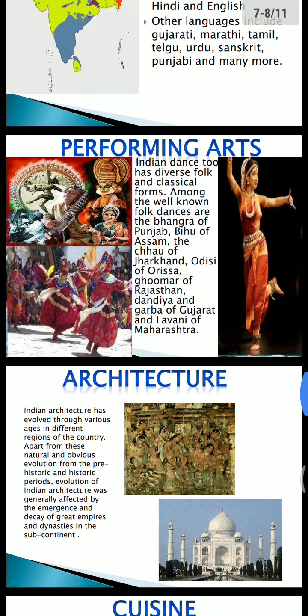If we talk about performing arts, Indian dance has diverse folk and classical forms. Among the well-known folk dances are the Bhangra of Punjab, Bihu of Assam, Chau of Jharkhand, Odissi of Odisha, Ghumar of Rajasthan, Dandiya and Garba of Gujarat, and Lavani of Maharashtra. They have a different and diverse variety of dance.